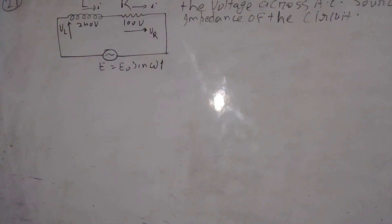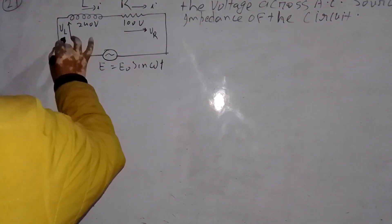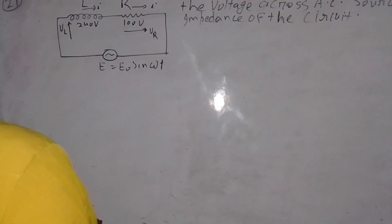Voltage across L and R are phasors. They would have vector resultant.